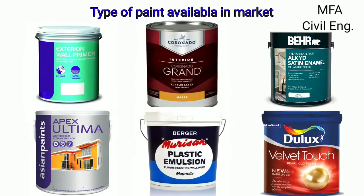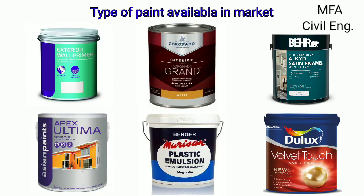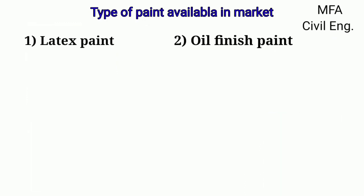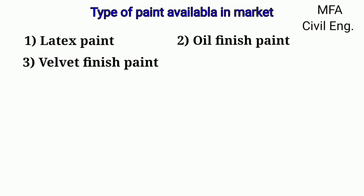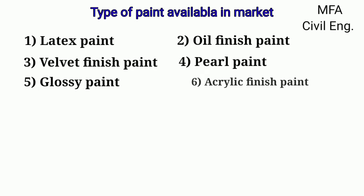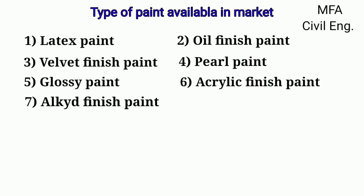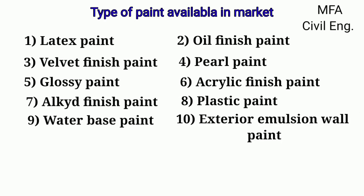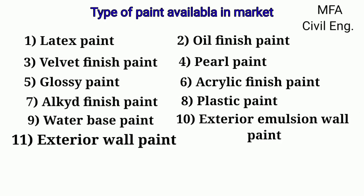Hello everyone, my name is Vazal, you are watching MFA Civil Engineering. The various types of paint which are commonly available in the market are: latex paint, oil finish paint, velvet finish paint, pearl paint, glossy paint, acrylic finish paint, alkyd finish paint, plastic paint, water based paint, exterior emulsion wall paint, and exterior wall paint.